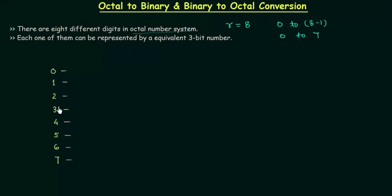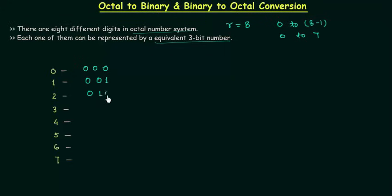The digits in the octal number system are 0 to 7, and each one of these can be represented by an equivalent 3-bit number. This is the most important part: 0 is represented as 000, 1 as 001, 2 as 010, 3 as 011, 4 as 100, 5 as 101, 6 as 110, and 7 as 111. This is how we represent the eight octal digits by their equivalent 3-bit numbers.